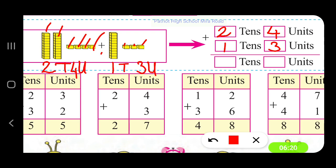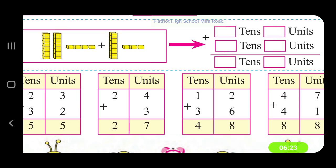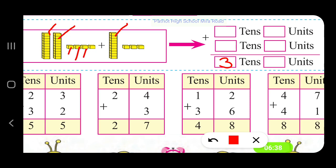If we count the tens, how many do we have together? 1, 2 plus 1 — 3 tens. And how many units? 1, 2, 3, 4, 5, 6, 7 — we have 7 units. So 2 tens and 4 units plus 1 ten and 3 units gives us 3 tens and 7 units, which is 37.